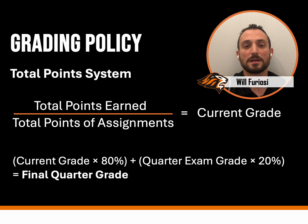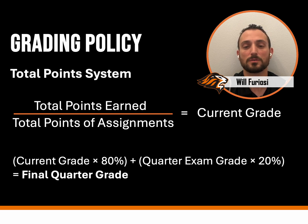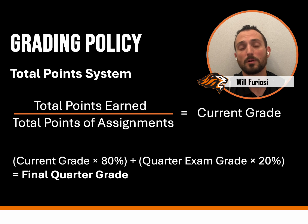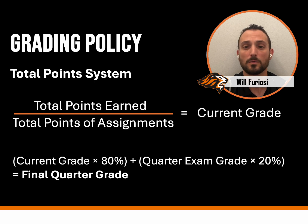The course utilizes a total points system. A final quarter grade is determined by 80% of the student's current grade added to 20% of the student's quarter exam grade — you can see the math below. In research in particular, students are graded mostly on their progress and less so on their performance, so as long as they're keeping up with their deadlines, they should be doing quite well in the course.